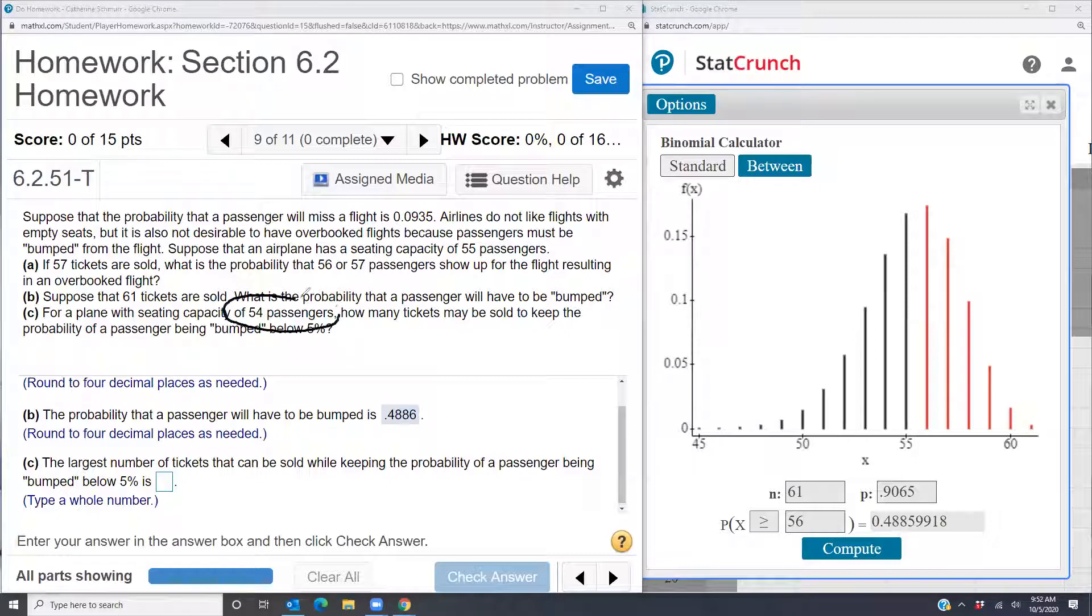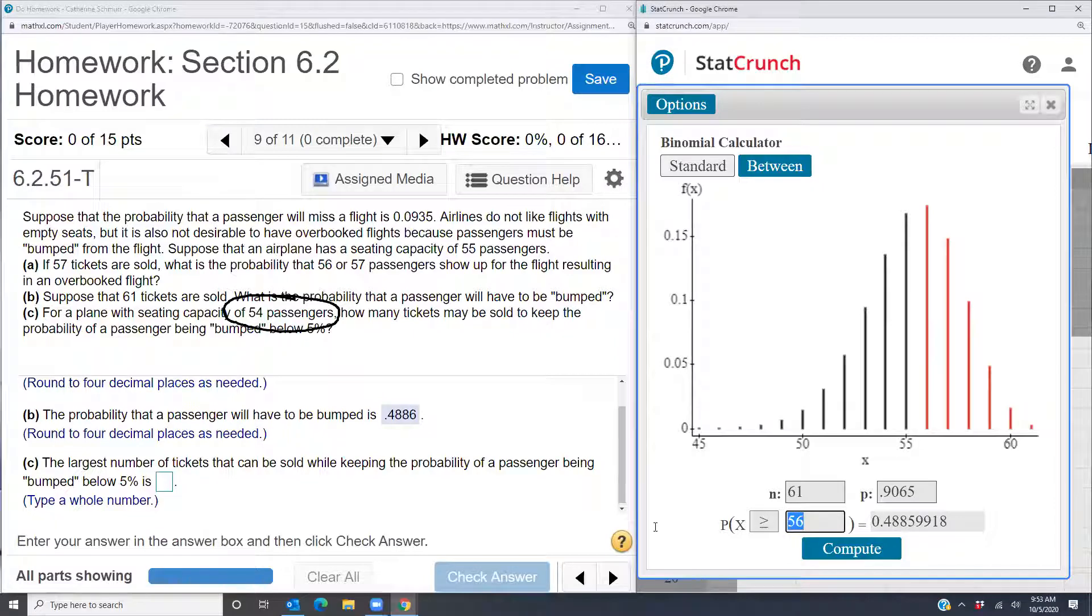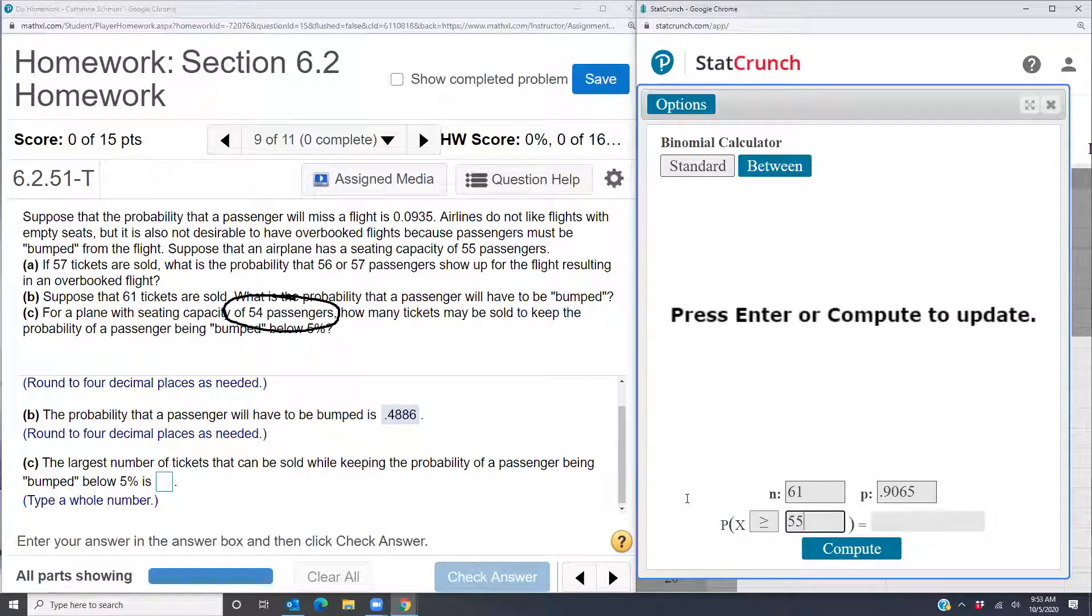So seating capacity is 54 passengers. And so what we want to do is we want to change our x. So the only way that someone would have to be bumped is if 55 or more passengers book the flight. If 54 book the flight, we're okay. But if 55 or more book, then we might have to bump someone. So the thing that we're playing with here is the number of tickets sold. So what I'm going to play with is n.